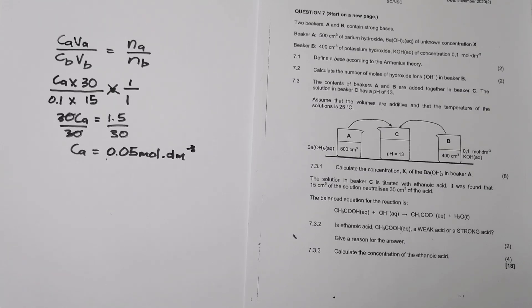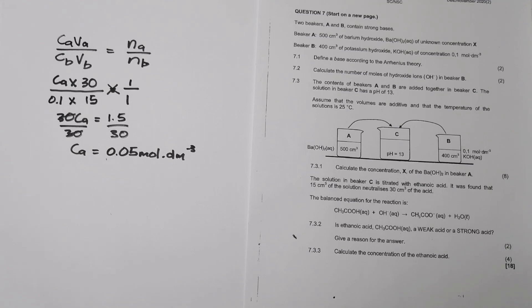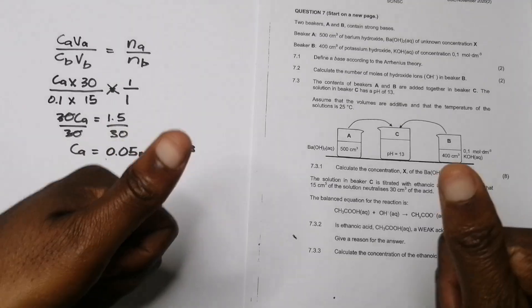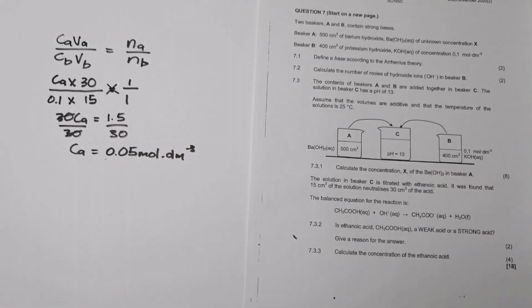That is the concentration of the ethanoic acid — 0.05 mol·dm⁻³. That's how the cookie crumbles, ladies and gents. Thank you so much and we'll see you next time when we discuss the other sections.